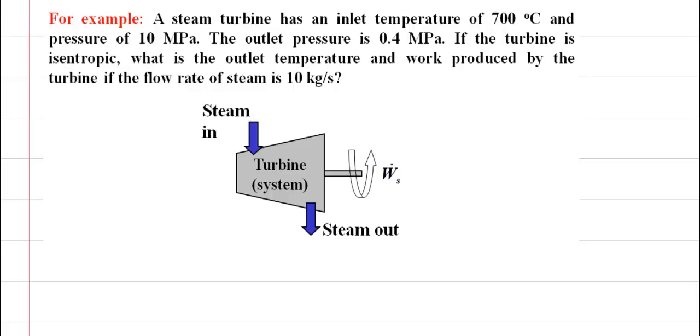In this example we're looking at a steam turbine. It's an isentropic steam turbine with an inlet temperature of 700 degrees Celsius.